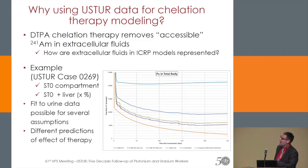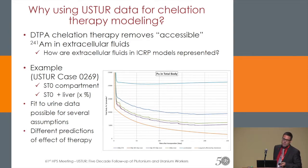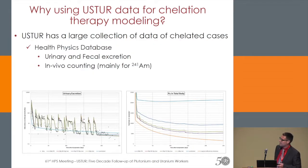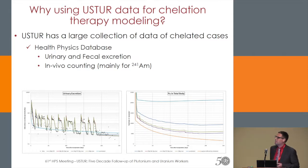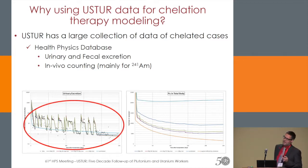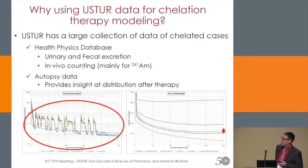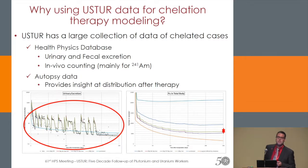You have the lower line, which is the lung, which is not affected, and you have the unchelated model, and somewhere in between all of these models end. That's where USTUR comes into play, because they provide data points — they have this health physics database about all the urinary and fecal excretion, some in vivo counting. And they provide the autopsy data, which is the point at the end of the scale. This is what guides us in selecting the model — that's why we are interested in using the USTUR data.